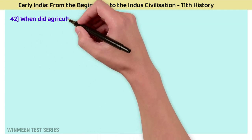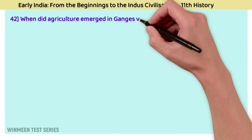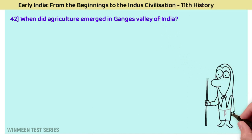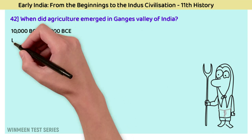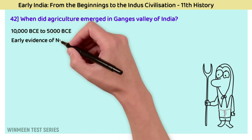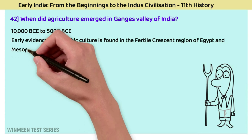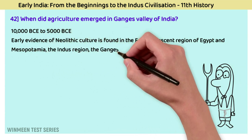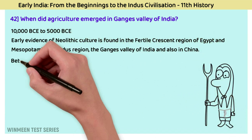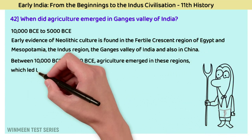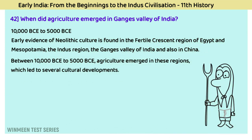Question 42: When did agriculture emerge in the Ganges Valley of India? The answer is 10,000 BCE to 5,000 BCE. Early evidence of Neolithic culture is found in the Fertile Crescent of Egypt and Mesopotamia, the Indus region, the Ganges Valley of India, and also in China. Between 10,000 BCE to 5,000 BCE, agriculture emerged in these regions, leading to several cultural developments.